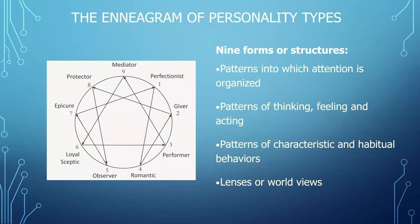So looking at the Enneagram again: we have nine forms or structures, patterned in how attention is organized — attention is organized differently at each one of these points. Each one of the points has a different pattern of thinking, feeling, and acting, as well as characteristics and habitual behaviors that run on autopilot. Each type also has a distinct lens, defense mechanism, and set of worldviews and perceptions with which they move through the world.